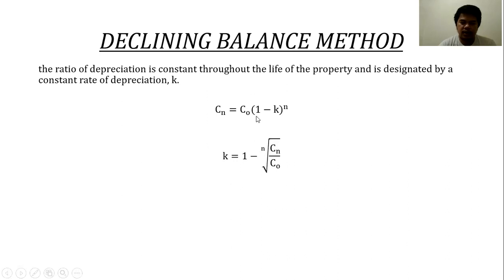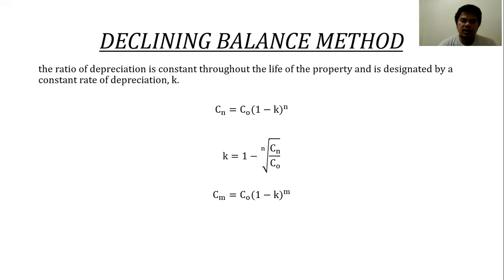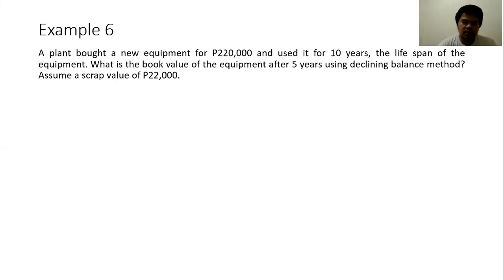Using this concept, we analyze Example 6: a plant bought new equipment for 220,000 and used it for 10 years. What is the book value after five years using the Declining Balance method, assuming a scrap value of 22,000? Since a scrap value is given, the machine will be sold as scrap at the end of its life. We first calculate k: k = 1 − (10th root of 22,000 / 220,000).